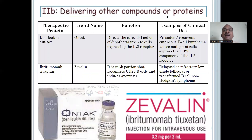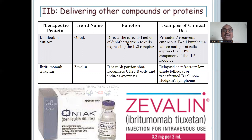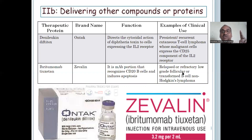Delivering of other compounds or proteins — we use Ontak injection, Denileukin. It directs cytocidal action to target cells. Used for T-cell lymphoma and malignant cells — also used to create particular beta cells. And Zevalin — Ibritumomab.